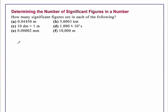A. 0.04450 meters. B. 5.0003 kilometers. C. 10 decimeters equals 1 meter. D. 1.000 times 10 to the 5th seconds. E. 0.00002 millimeter. F. 10,000 meters.